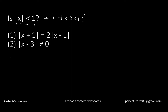The first statement says absolute value of (x + 1) is equal to 2 times absolute value of (x − 1). This gives us multiple possibilities — basically four possibilities. The first case is x + 1 equals 2x − 1, which gives x + 1 = 2x − 2, so x = 3.